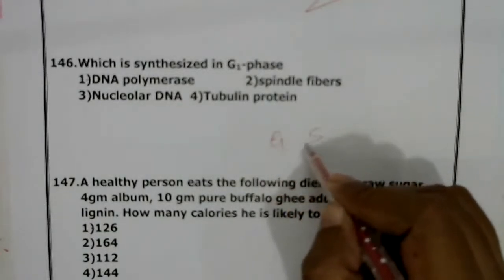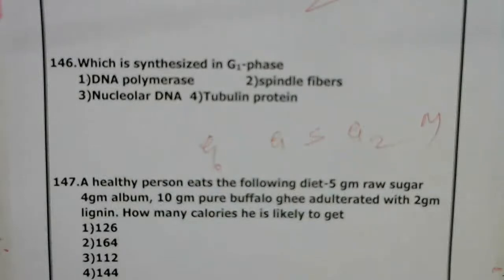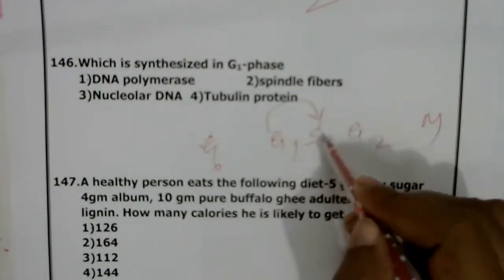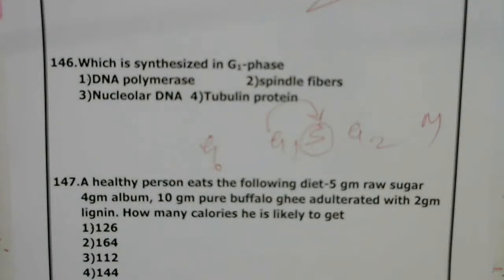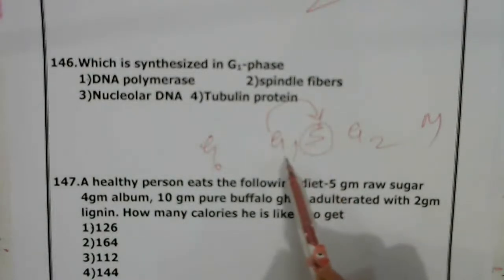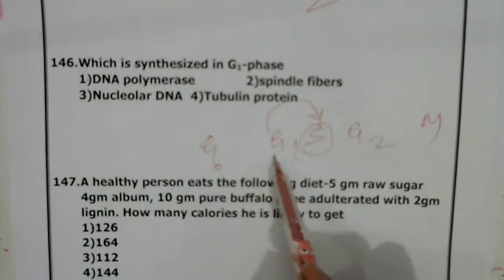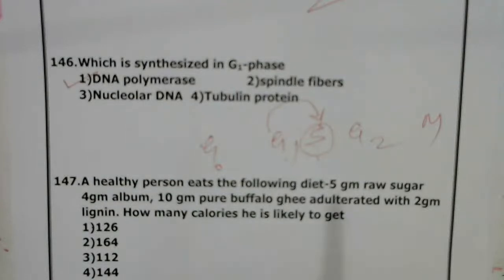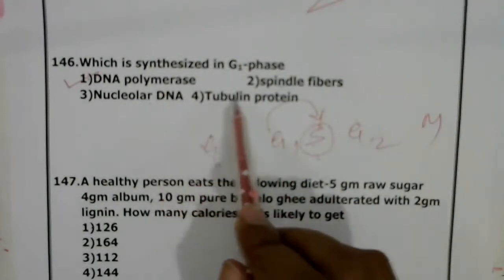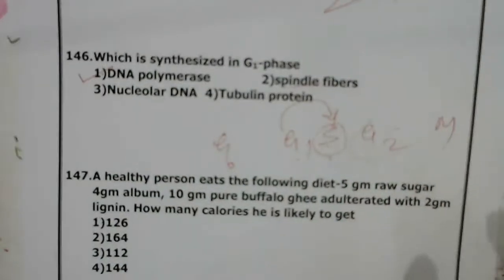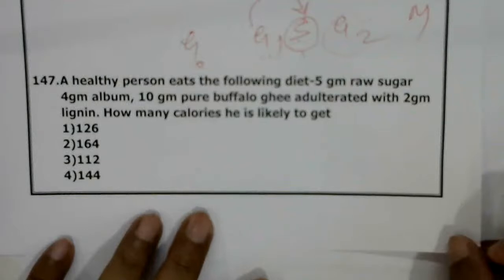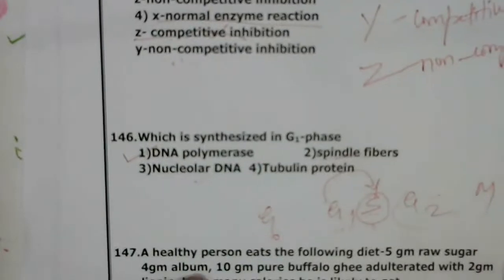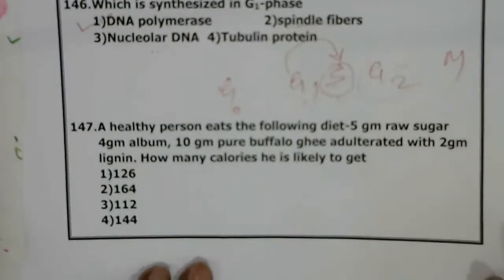Question 146: What is synthesized in G1 phase? G1 phase is followed by S, G2, and M phase. At the G1 to S transition, DNA replication occurs in S phase. DNA polymerase is very useful for DNA replication, so before entering S phase, all the DNA polymerase necessary for DNA replication is prepared in G1 phase. Therefore, the correct answer is DNA polymerase. Spindle fibers, tubulin protein — these are prepared in G2 phase.